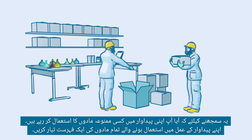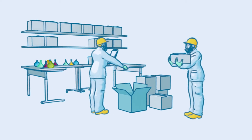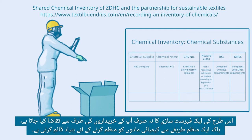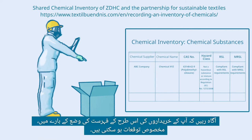To understand whether you are using any restricted substances in your production, prepare an inventory of all substances in your production process. Such an inventory is not only required by your buyers but also forms the basis for managing chemicals in a systematic way. Be aware that your buyers may have specific expectations regarding the format of such an inventory.